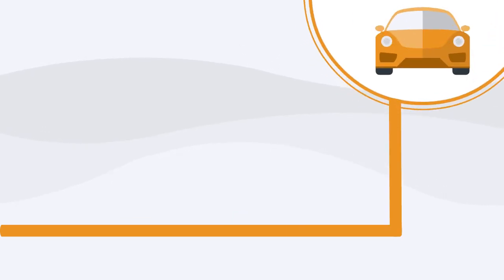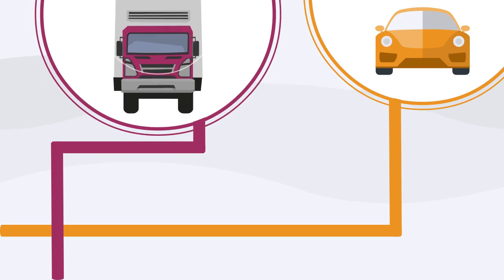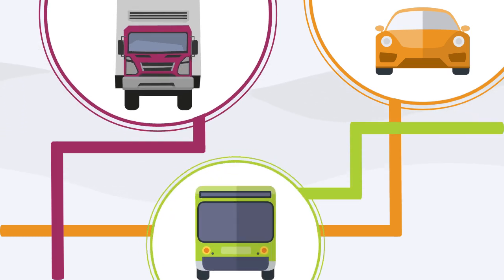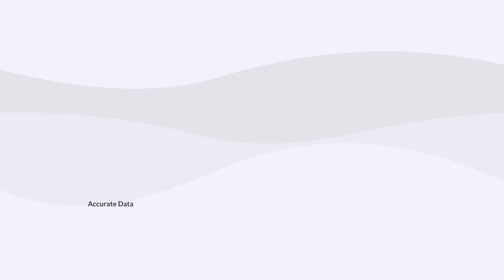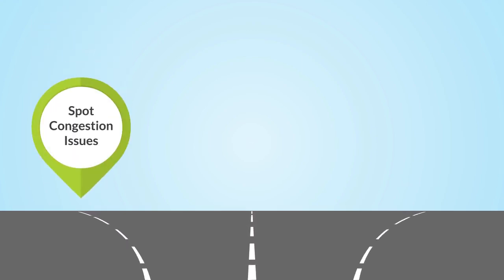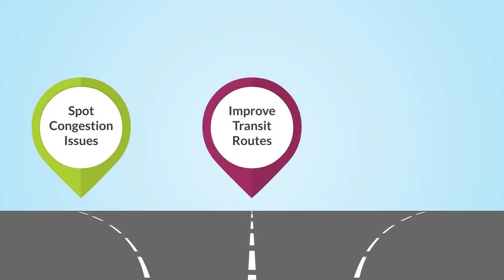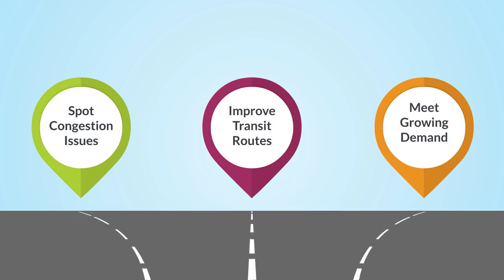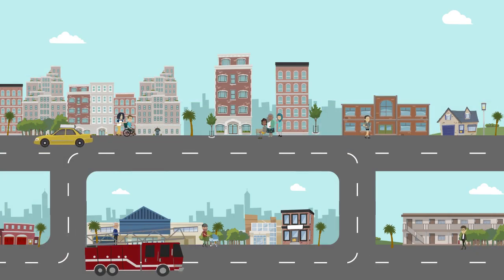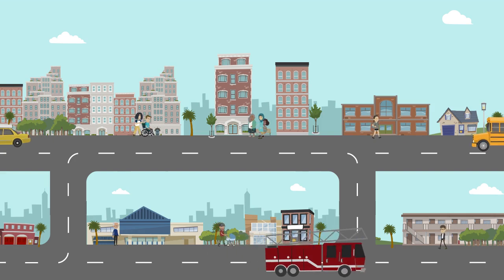A travel demand model is more than just a tool — it's a roadmap guiding us toward a more efficient transportation system for Florida's future. By using accurate data and reliable methods, we can plan and tackle the challenges that lie ahead. With these models, we can spot where traffic is likely to build up, find ways to improve public transit routes, and ensure that our transportation network meets the needs of our growing communities. This not only makes it easier for people to get around, but also helps us build a solid economy as we move forward together.